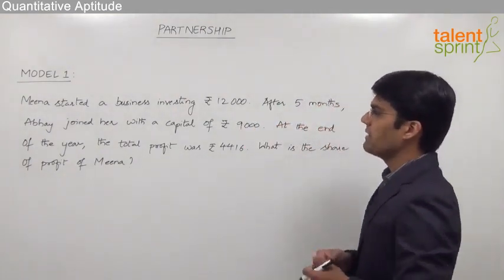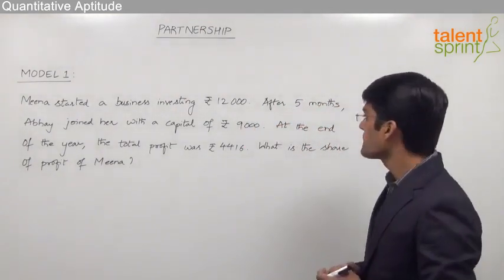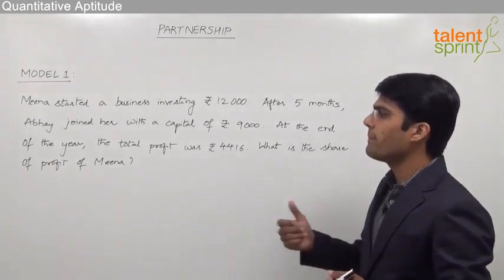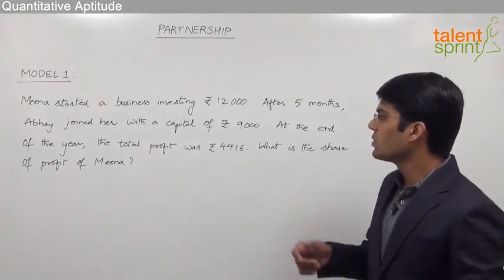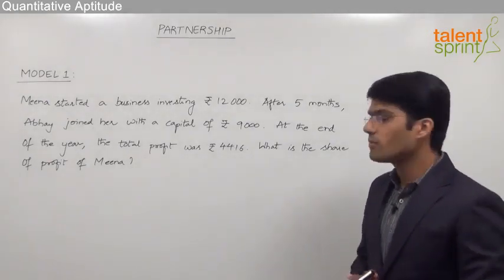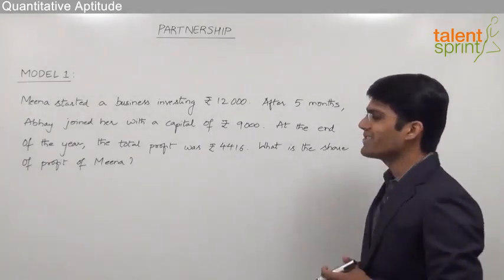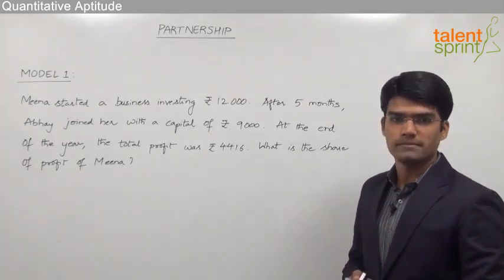Meena started a business investing rupees 12,000. After 5 months, Abhay joined her with a capital of rupees 9,000. At the end of the year, the total profit was 4,416. What is the share of profit of Meena?